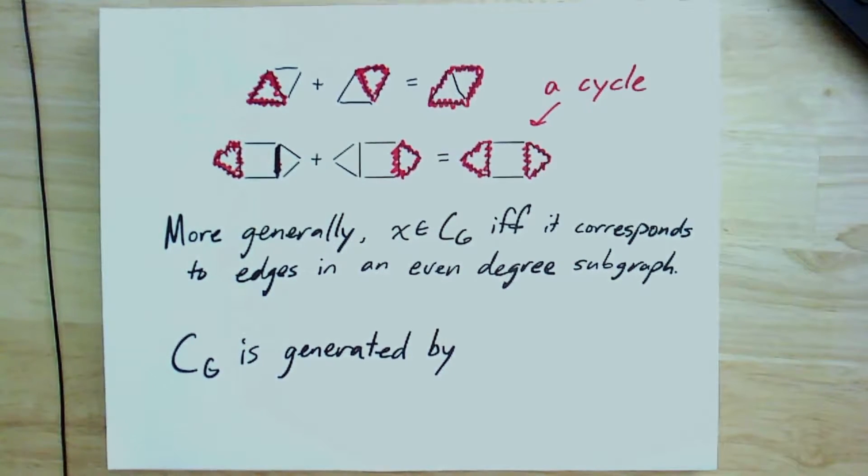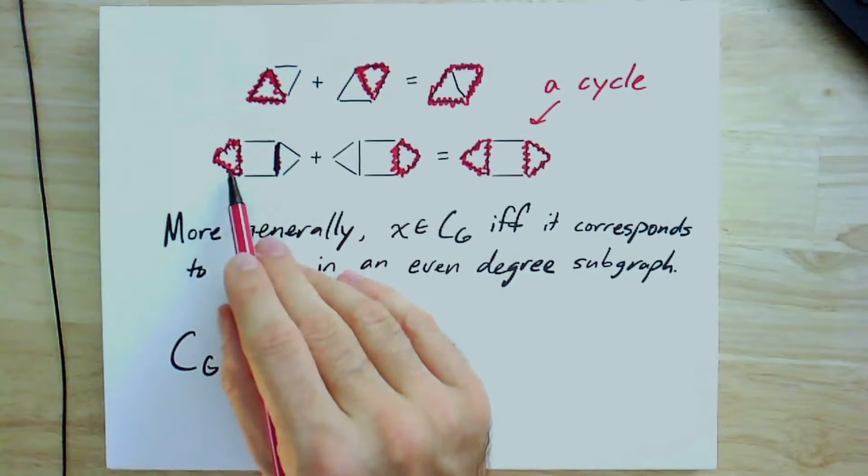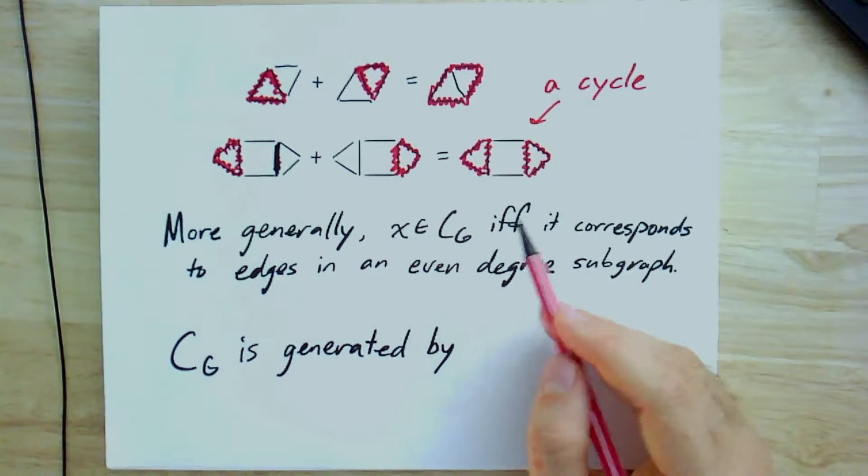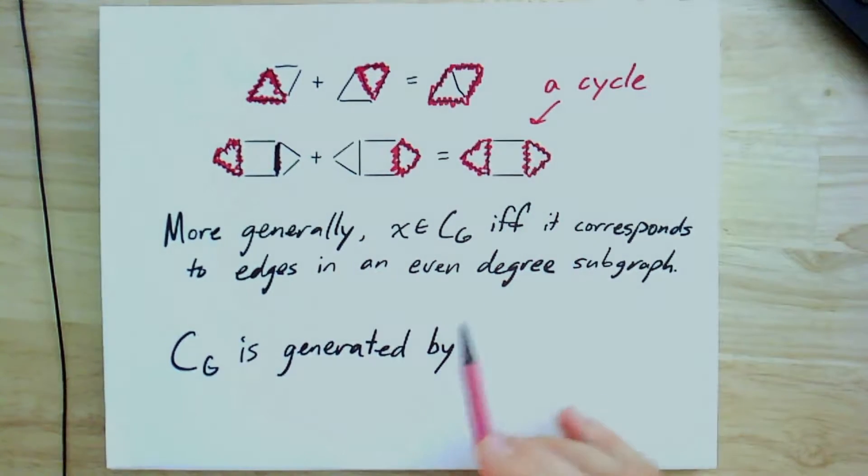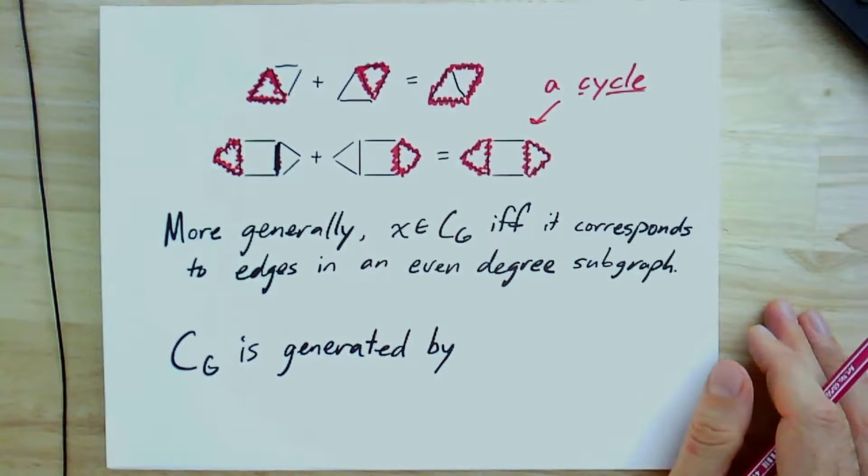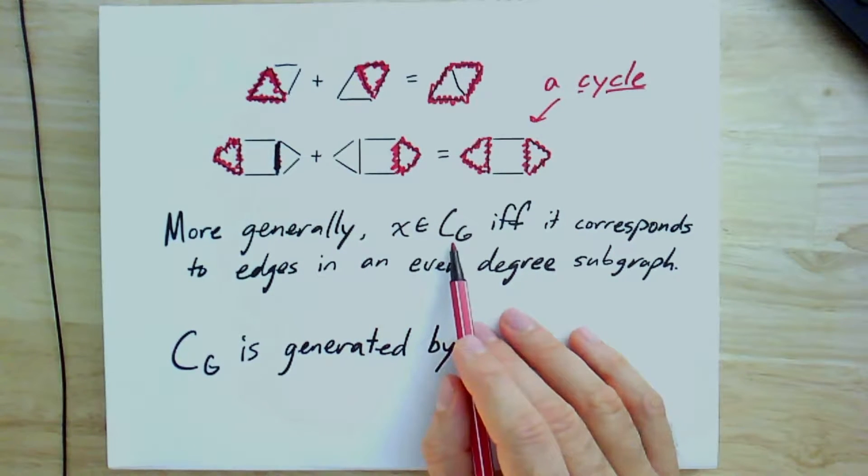So it is going to be in the cycle space because just by linearity, right, we know that b times this cycle is zero and b times this cycle is zero, so b times their sum is zero. And so sometimes in this purely algebraic setting, what counts as a cycle is a little bit more than what we would call a cycle graph.